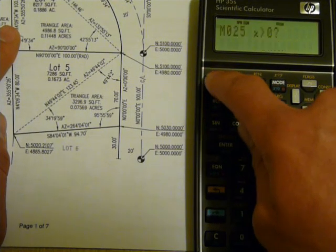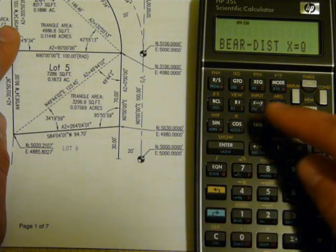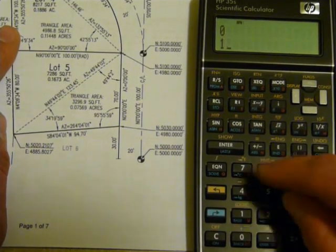Triangles first. Bearing-bearing intersection. There's bearing distance. We could use Q, but since we're there, we'll just use one.